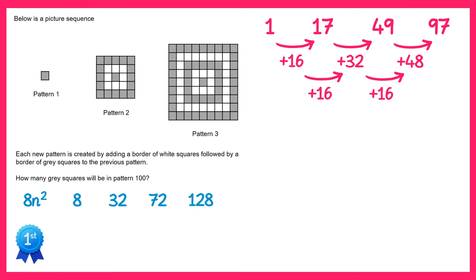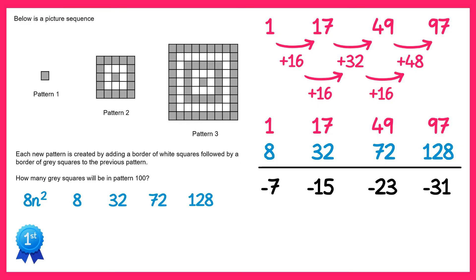What we do now is we take our sequence and subtract 8n squared from it. If we do these subtractions you do 1 take away 8 which is negative 7, 17 take away 32 which is negative 15, 49 take 72 which is negative 23, and finally 97 take 128 which is negative 31.